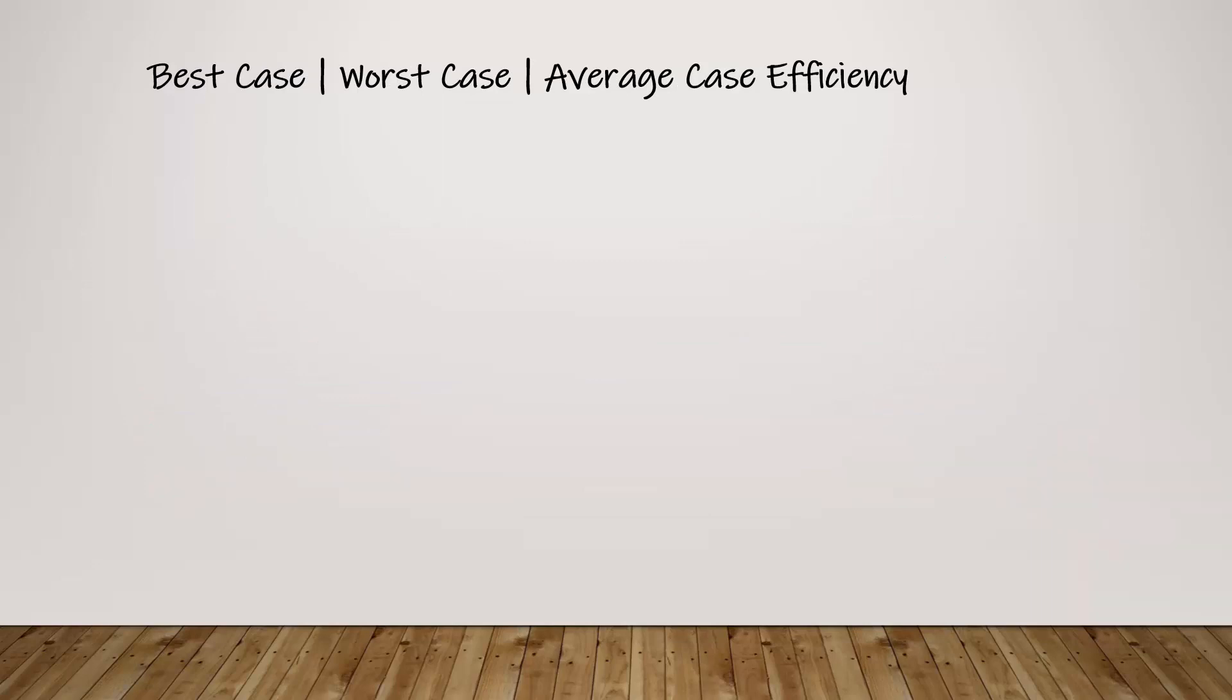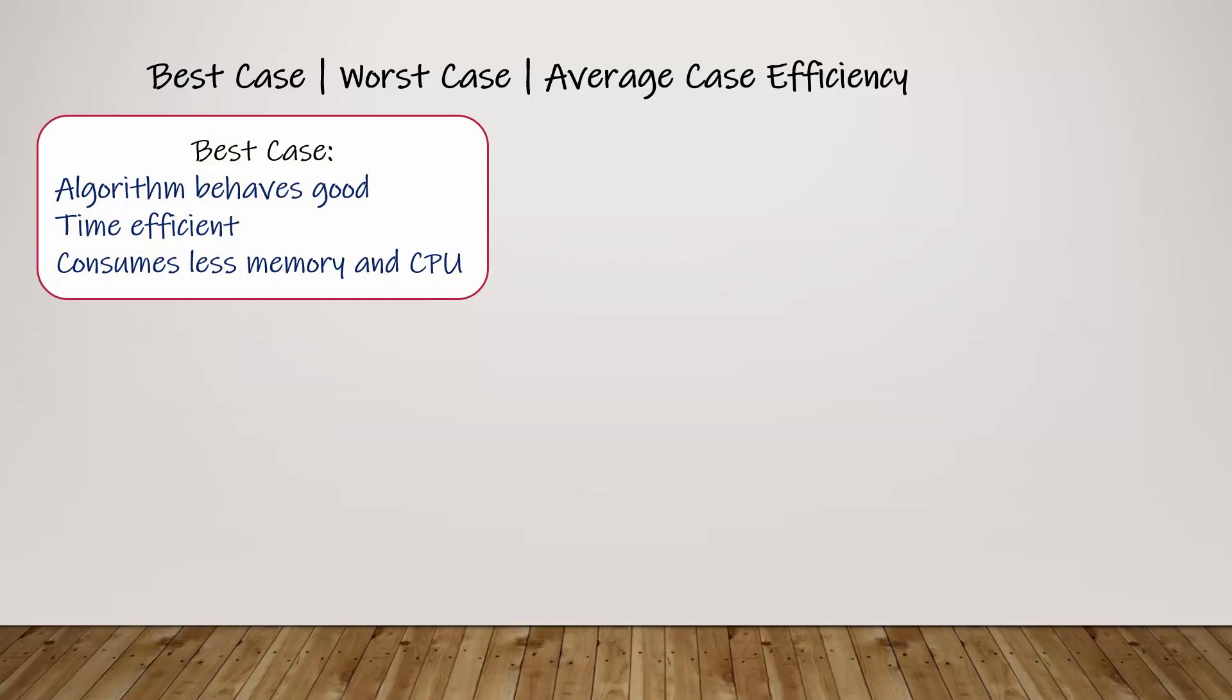When we talk about efficiency of an algorithm, we see these three things: best case, worst case, and average case efficiency. When it's best case, your algorithm will behave good and time efficient and it will consume less memory and CPU.